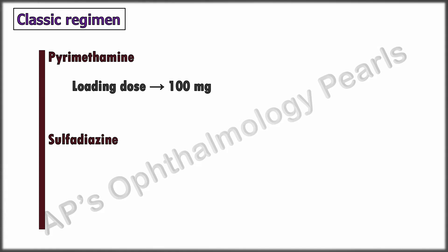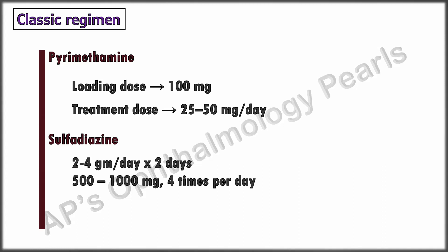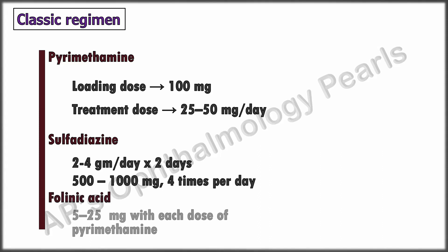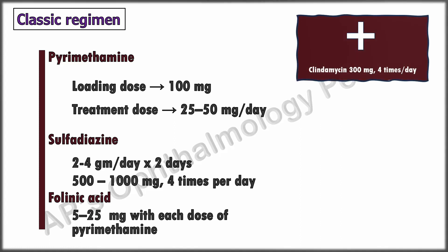The classic regimen consists of a combination of pyrimethamine and sulfadiazine. Pyrimethamine is given as a loading dose of 100 mg on the first day, followed by a maintenance dose of 25 to 50 mg per day. Sulfadiazine is given at 2 to 4 grams per day for two days, followed by 0.5 to 1 gram four times a day. Folinic acid, 5 to 25 mg with each dose of pyrimethamine, is added to prevent myelosuppression.